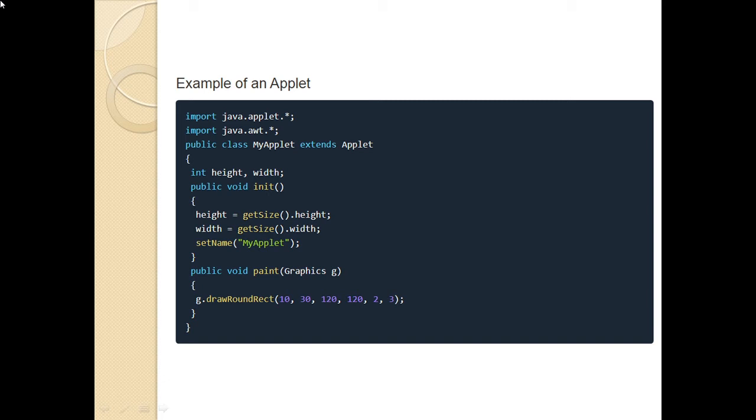Now, myapplet will extend the class applet. And then, I have defined two variables height and width which is of integer type. I have created or I have called the method init. In init, I specify the size or I get the size of the height by the get size method. Size of the width by the get size method. I set a name to the applet by my applet.